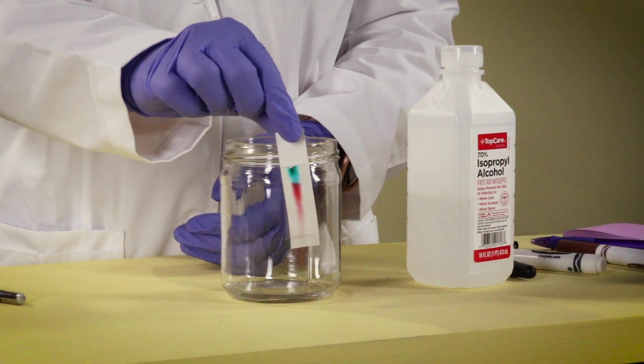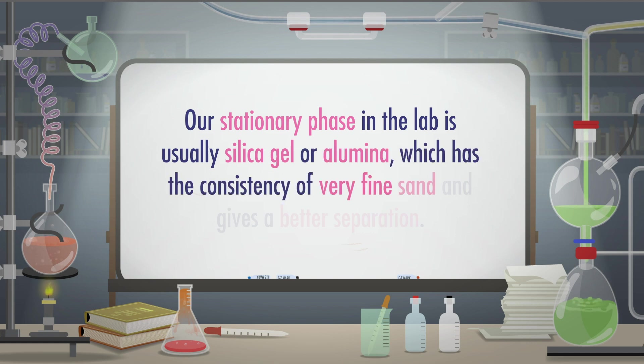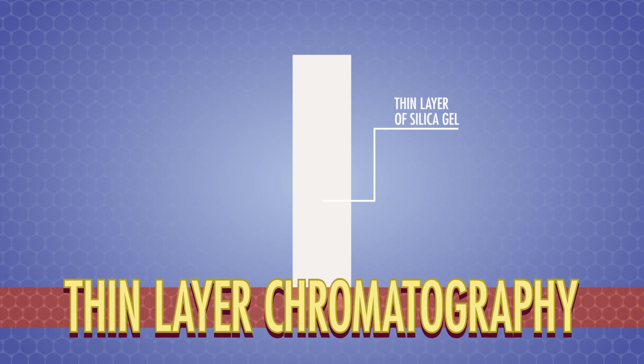Also, because paper is porous, the colors in the paper chromatography experiment were pretty spread out, which isn't that useful for working with organic chemicals. So our stationary phase in the lab is usually silica gel or alumina, which has the consistency of very fine sand and gives a better separation. A thin layer of the stationary phase is adhered to a glass, aluminum, or plastic-backed plate, and we call the technique thin layer chromatography, or TLC for short.